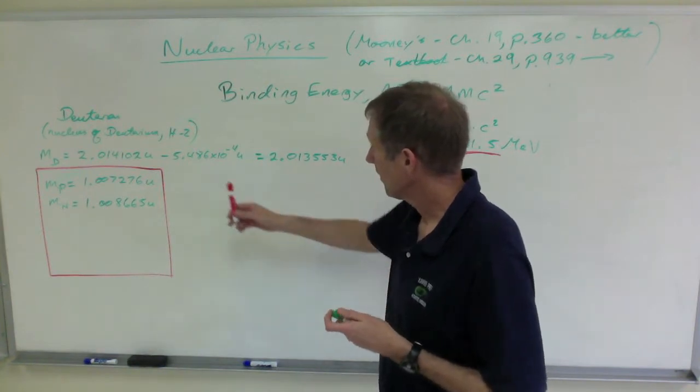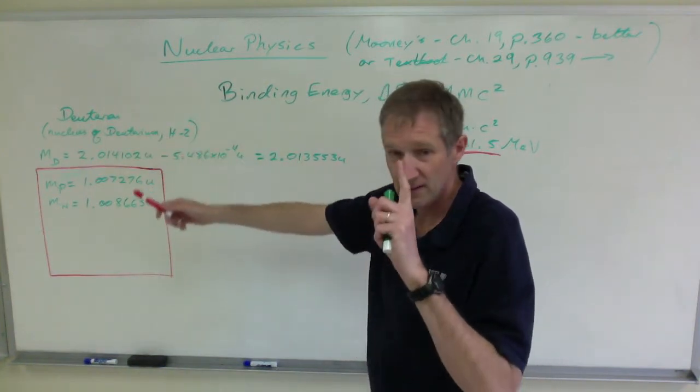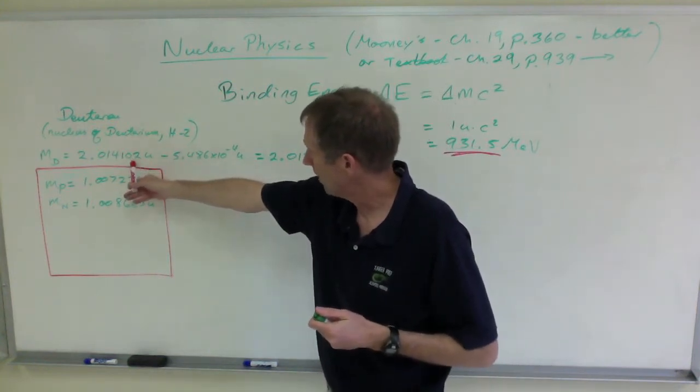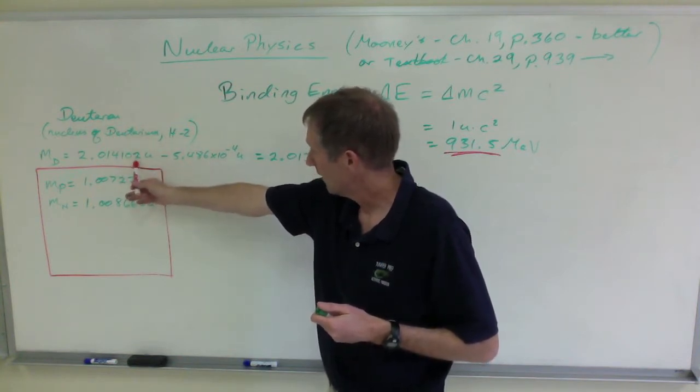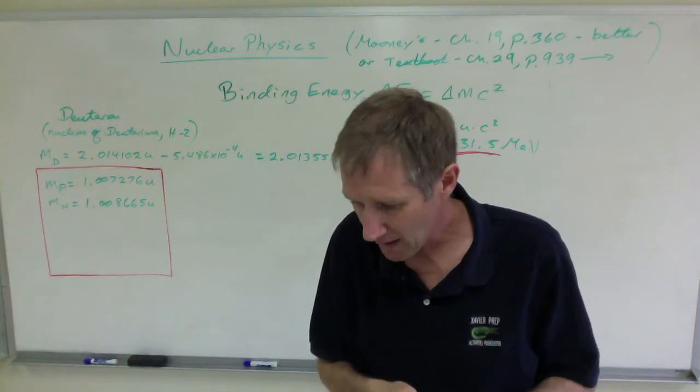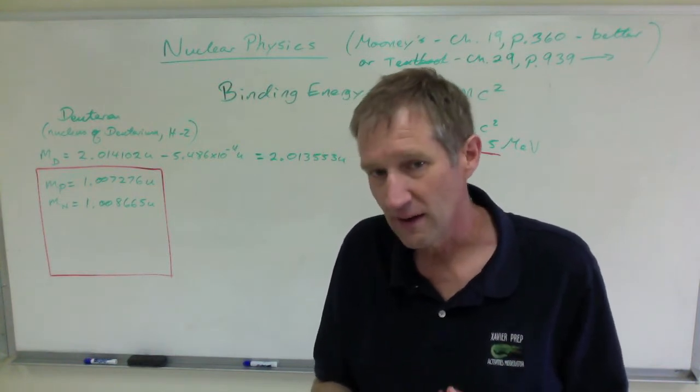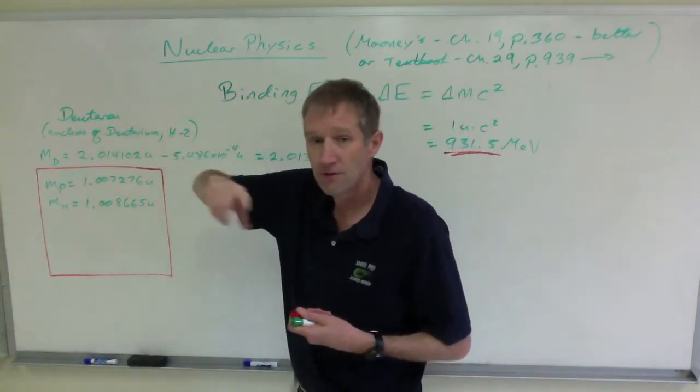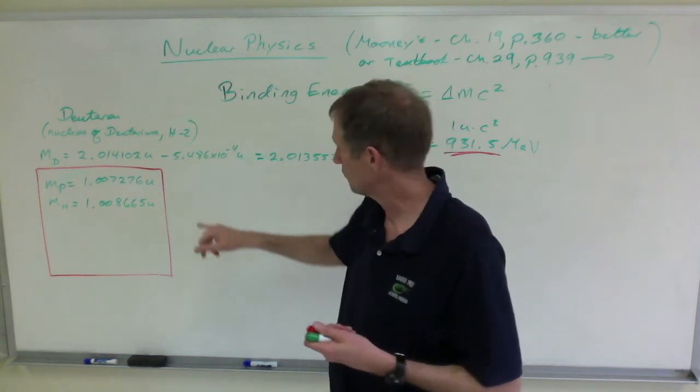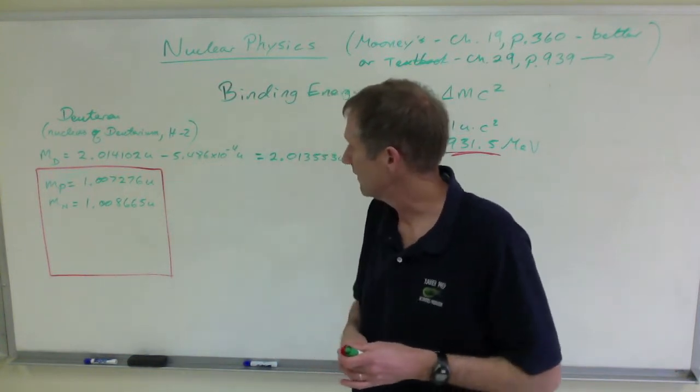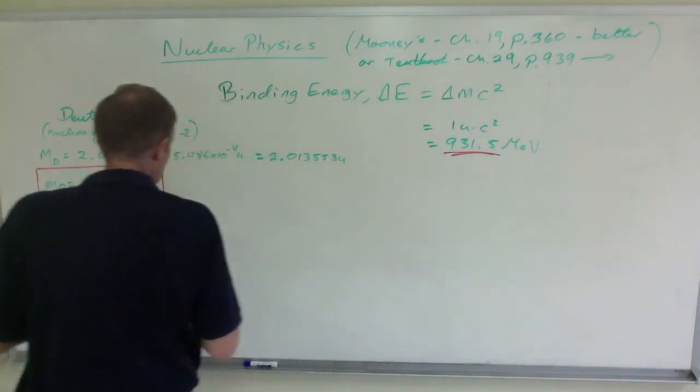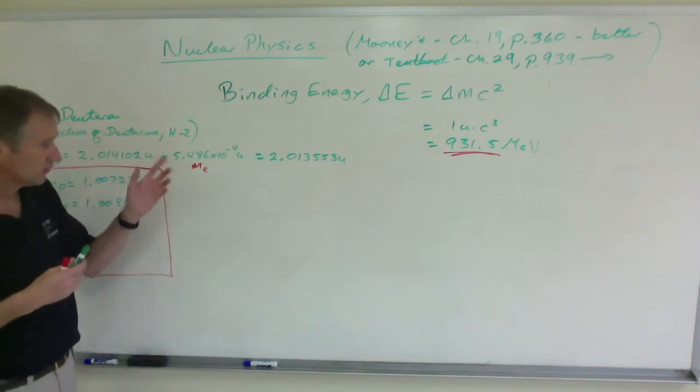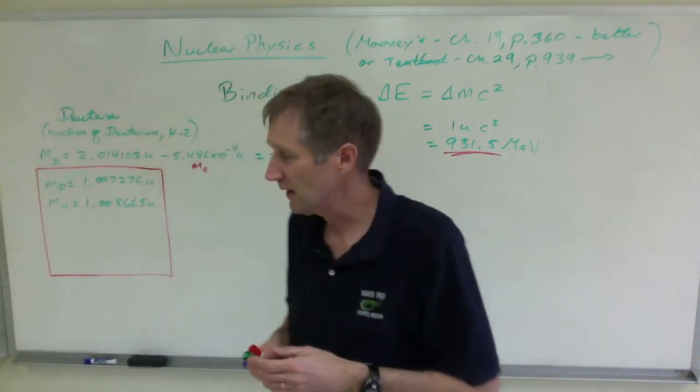So this is deuterium. So the deuteron is the nucleus of a deuterium atom. And that is the mass of a deuterium. I got this out of the textbook at the end of chapter 29, and also in the appendices. They have all these numbers, but these are the masses of the entire atom. But I only want the nucleus. And so I went and I subtracted out the mass of an electron. And you know that hydrogen only has one electron when it's not ionized.